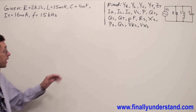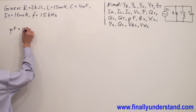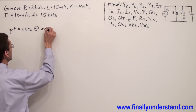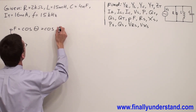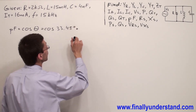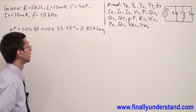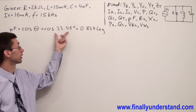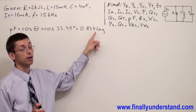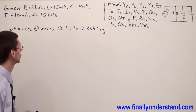Now we are ready to find the power factor. Power factor is equal cosine of angle theta, and this is the angle next to Z_total. So this is equal cosine of 33.45 degrees, which equals 0.834. Because my angle is positive, I write lag. This means the total current in the circuit is going to lag the voltage source by angle of 33.45 degrees.